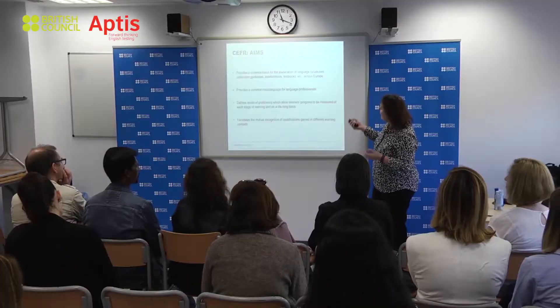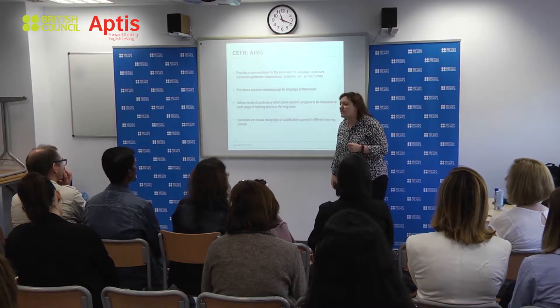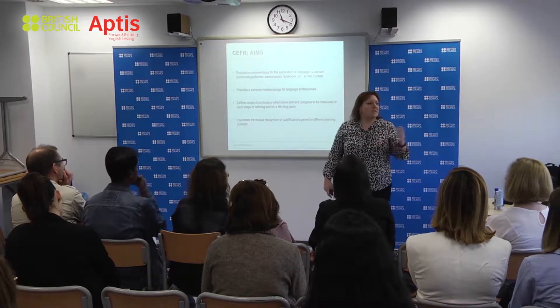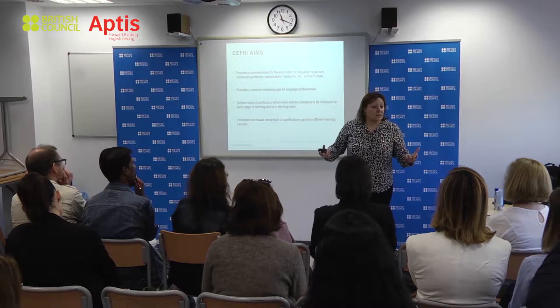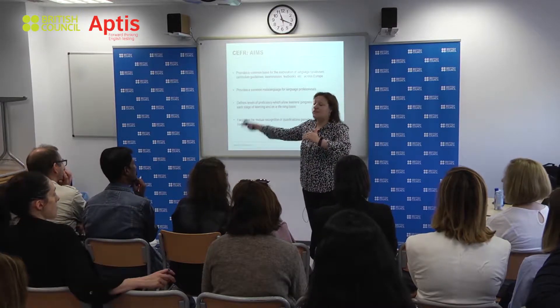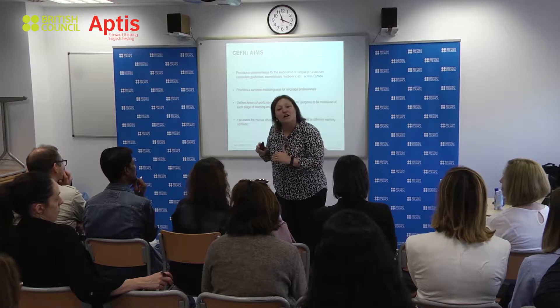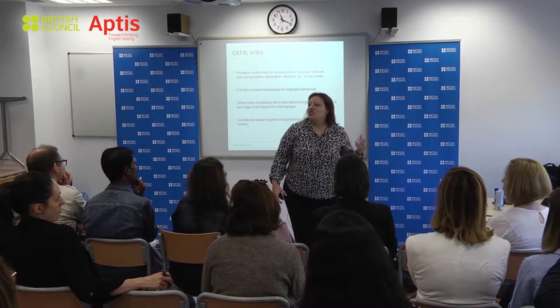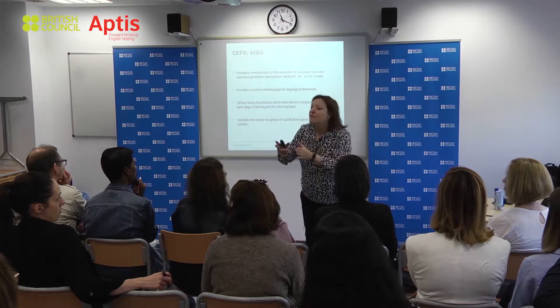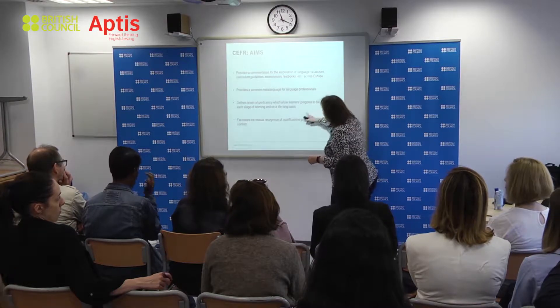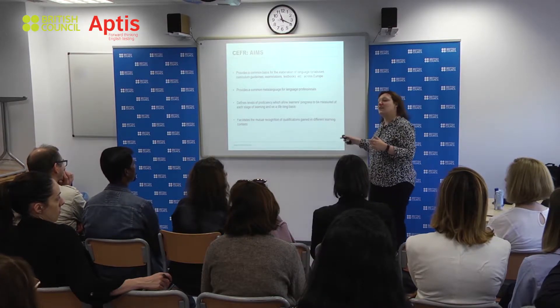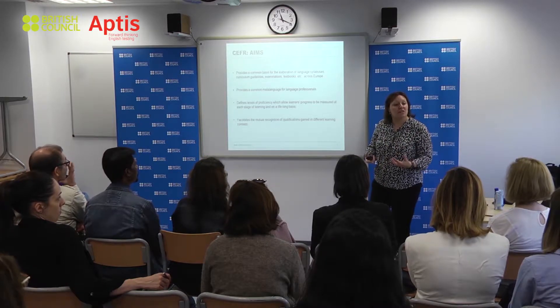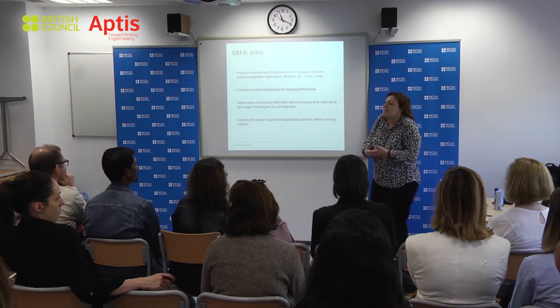Finally, there is mutual recognition of qualifications. Aptis B2, for example — what's that in IELTS? I know it's a 5.5 to 7, because IELTS has been aligned to the CEFR. So if you score 6 in IELTS, you should be at B2, which is comparable across TOEFL, TOEIC, Cambridge tests and others. We now have mutual recognition of qualifications, which helps the movement of students and workers — initially across Europe, but now across the world.